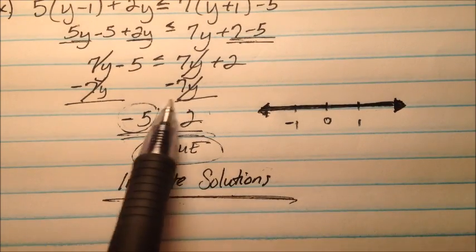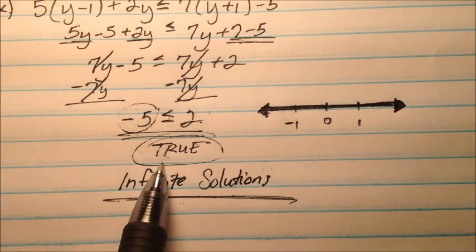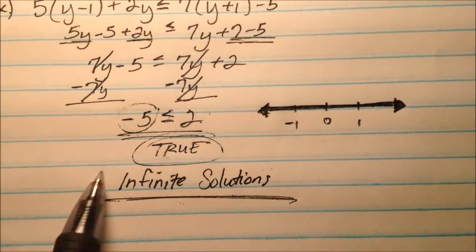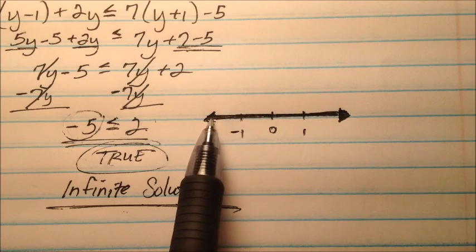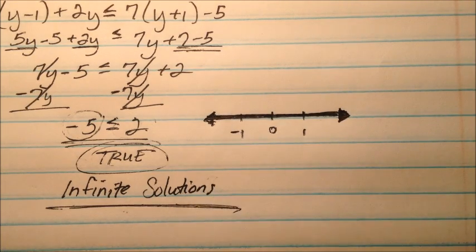So all the variables cancel, you're left with a true statement. So we know when that happens, it's infinite solutions. And when I graph it as an inequality, it's going to be just a solid line over everything.